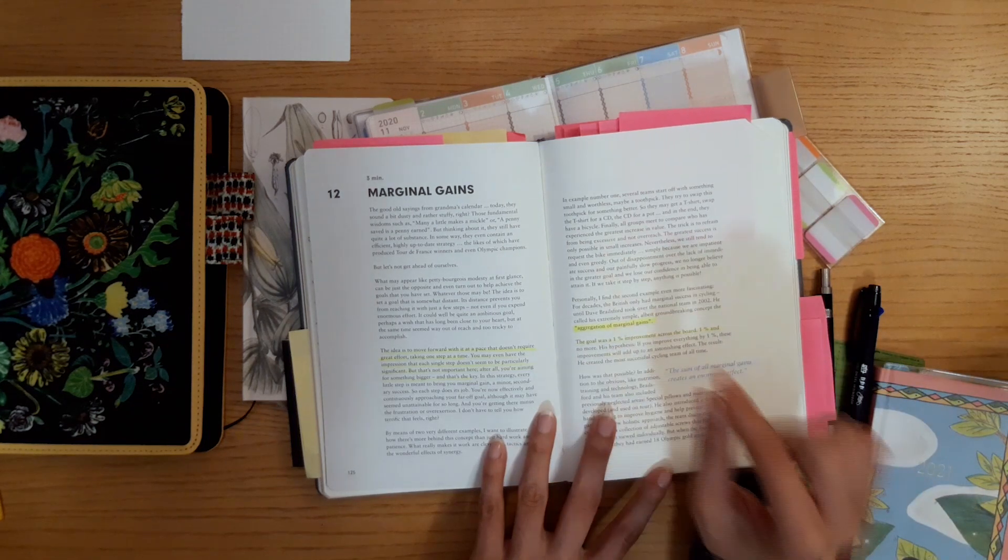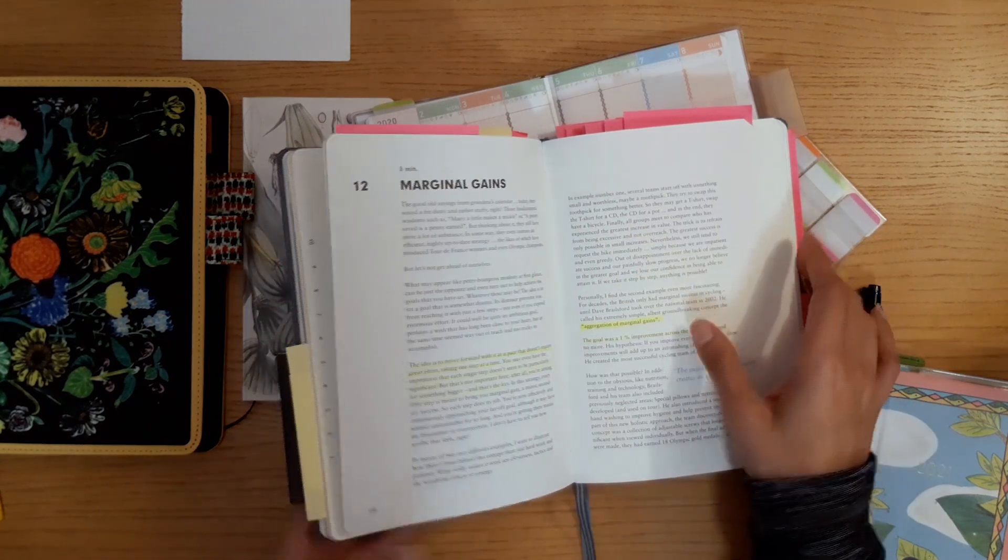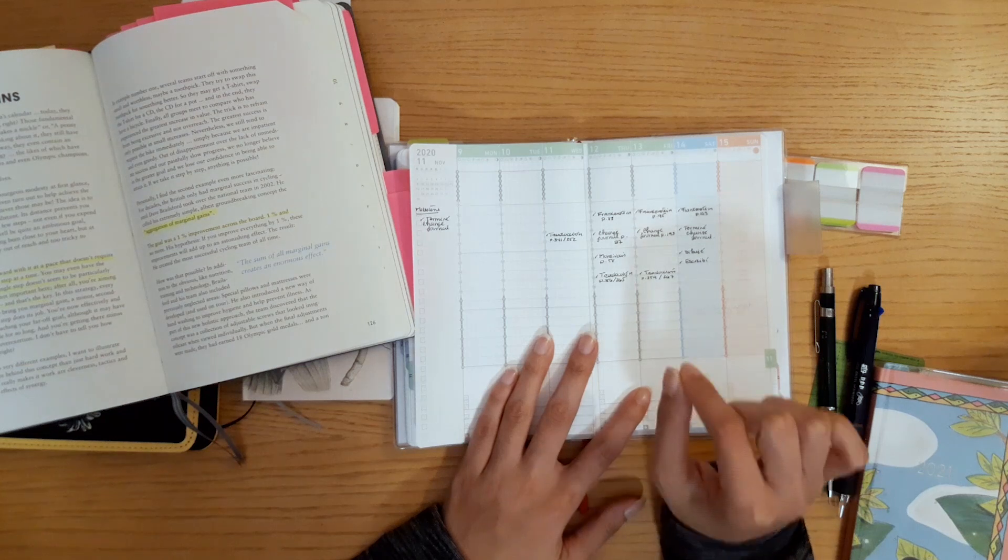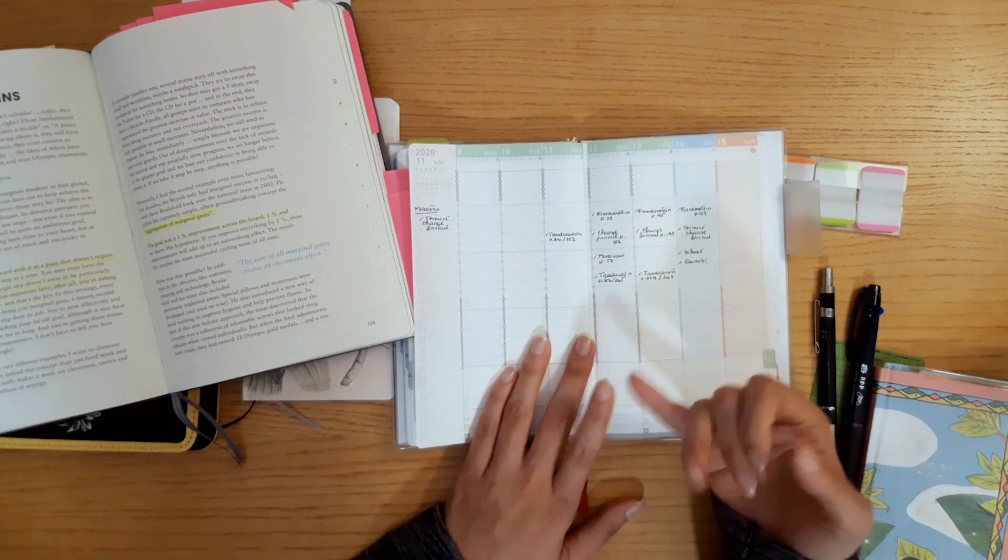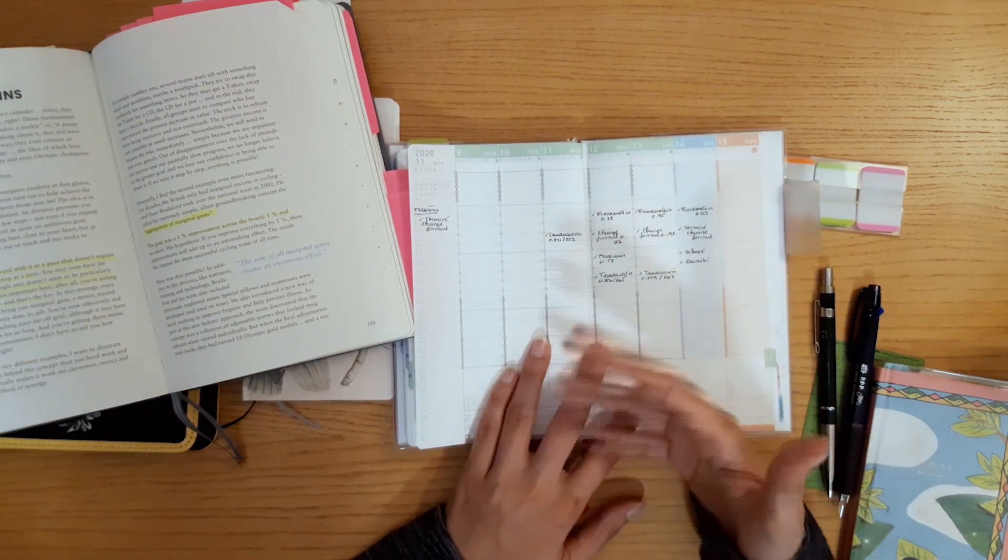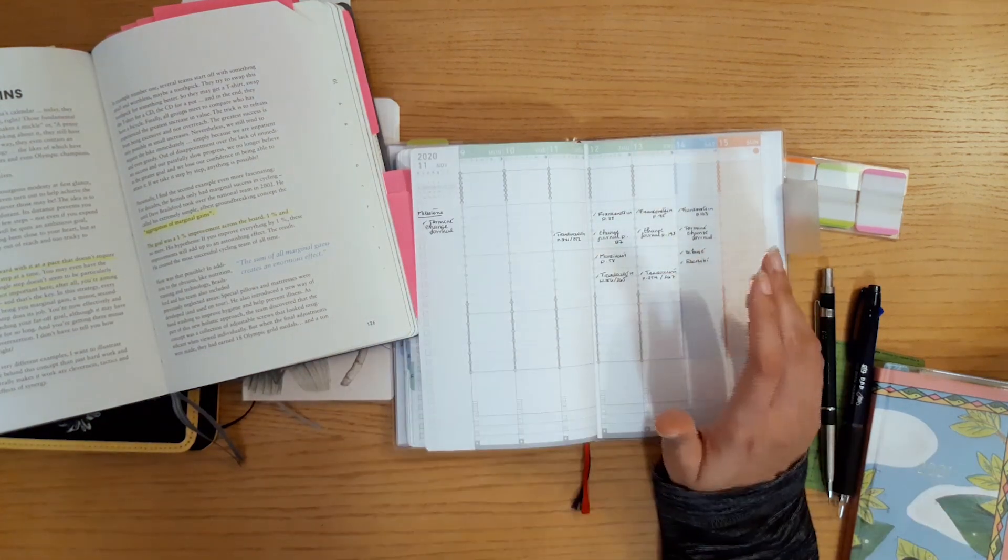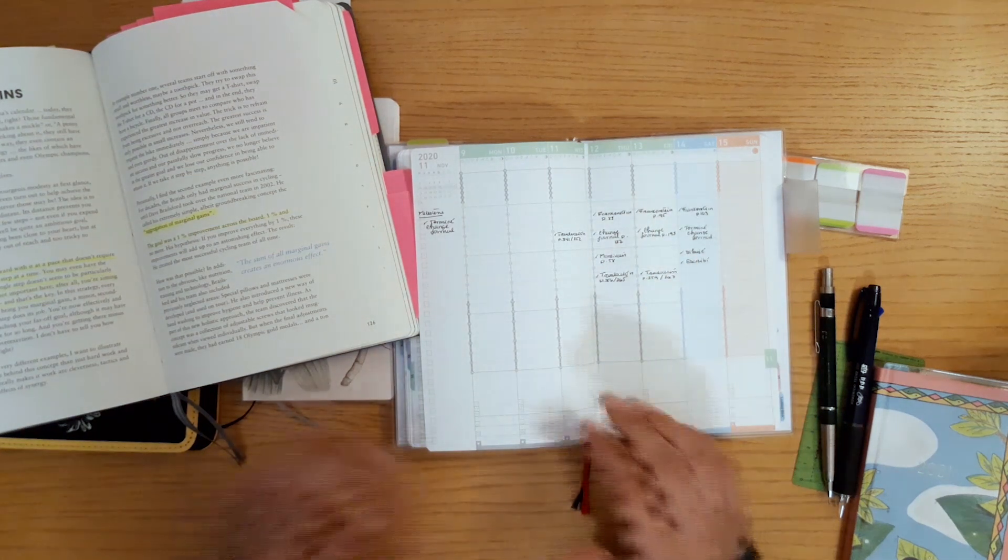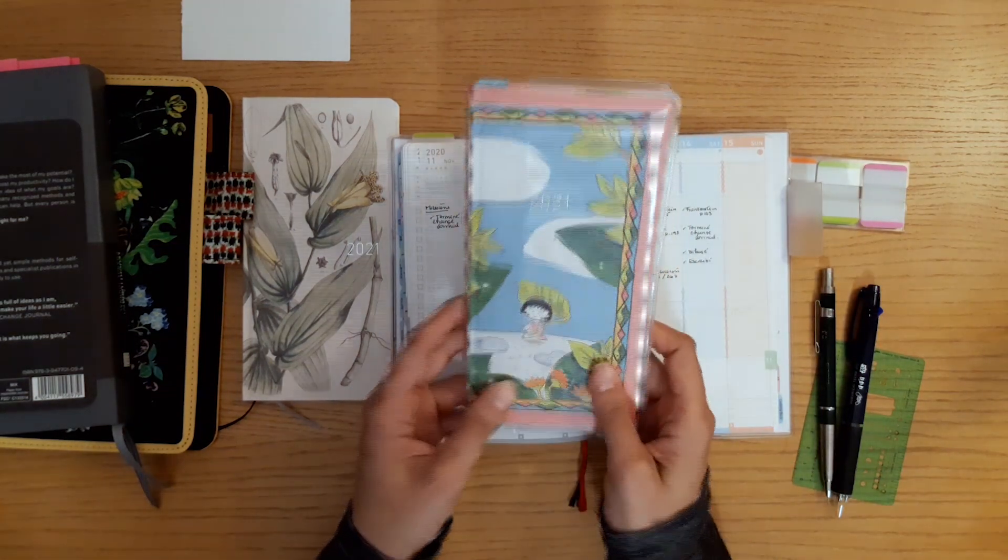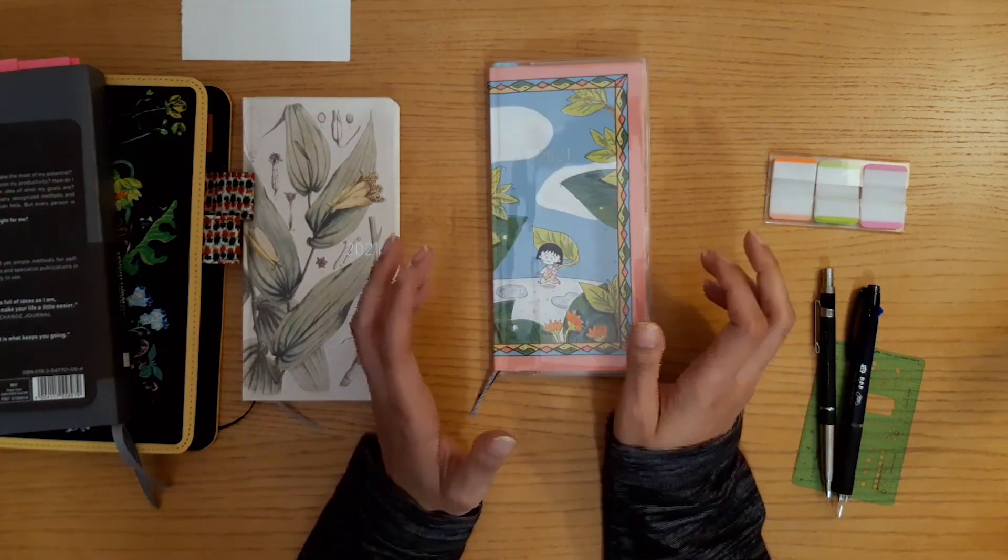The goal is 1% improvement across the board, 1% and no more. I realized that this is kind of what I was doing here. I was tracking my 1% improvement towards those specific goals: reading, writing, learning more. I wanted to keep track of my progress in here and also some specific projects I had. So this year this is going to be my 1% journal or my 1% planner. This is where I'm going to keep track of those marginal gains.